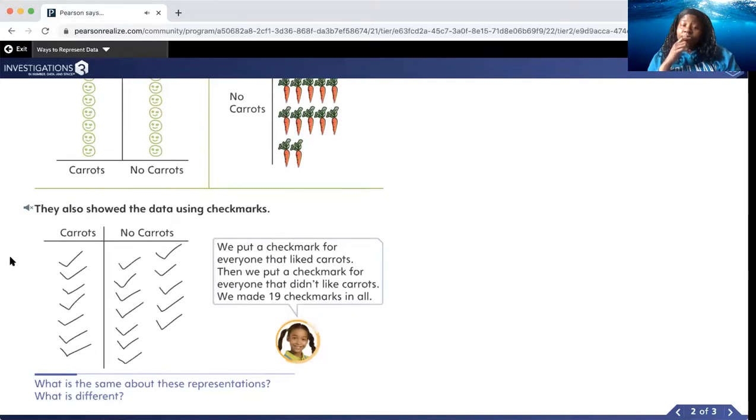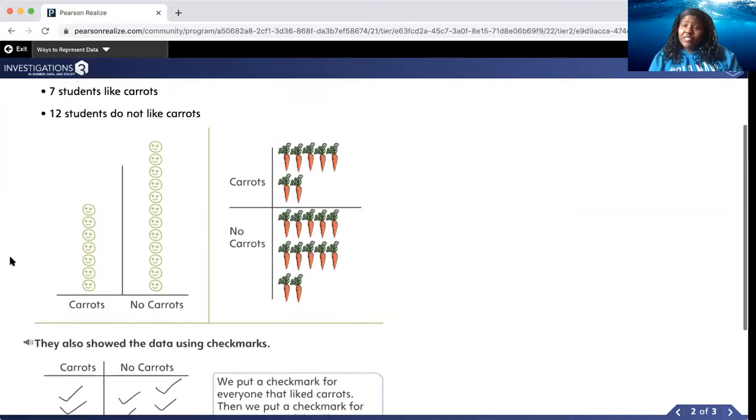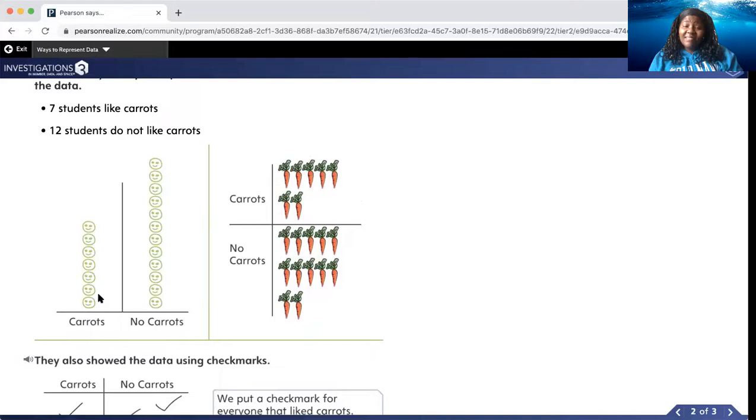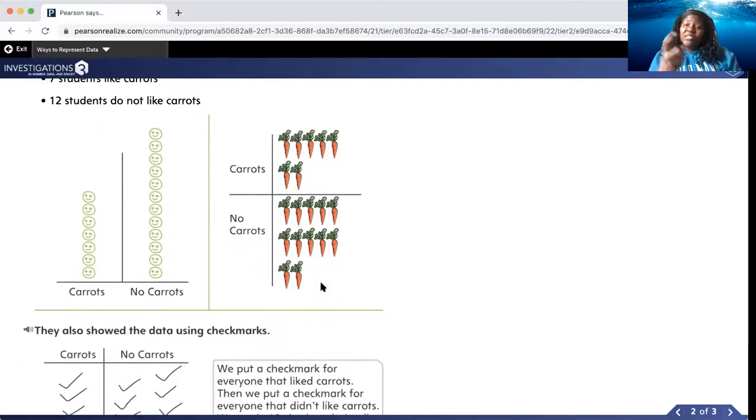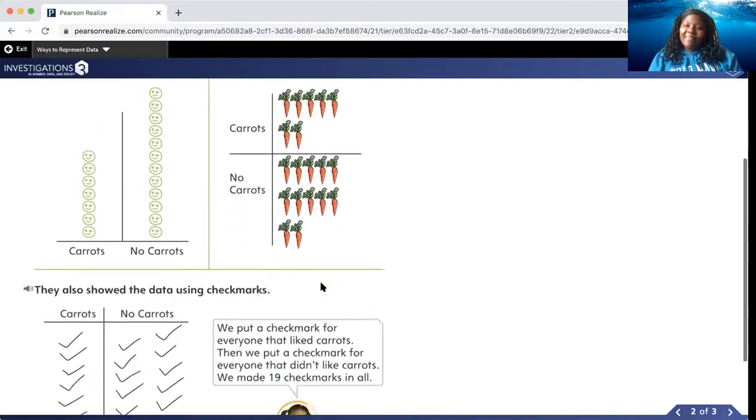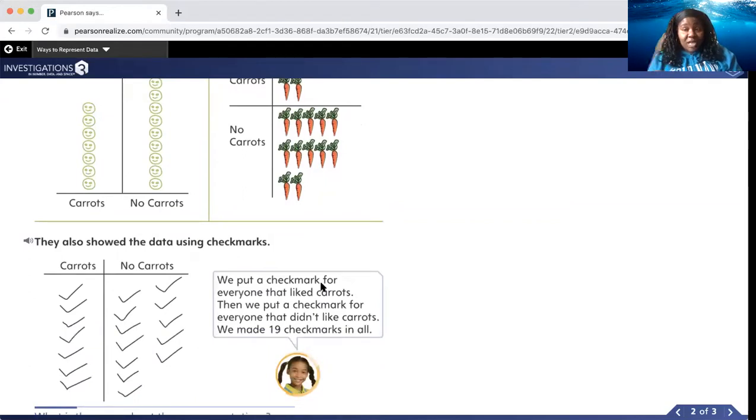What is the same about these representations? What is different? So what is the same? What's the same is that the number didn't change. Whether you used smiley faces or pictures of carrots, the number doesn't change. Seven like carrots. Seven like carrots here. Twelve students do not like carrots with the smiley faces. Twelve students do not like carrots here. So even though you may use a different way to represent the data, the data never changes.